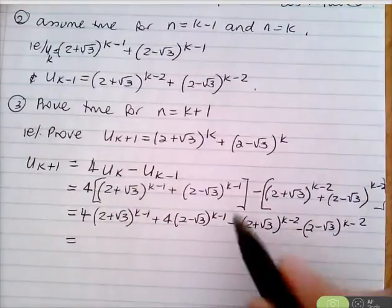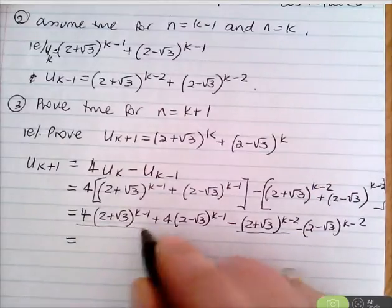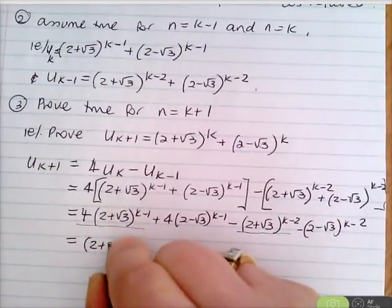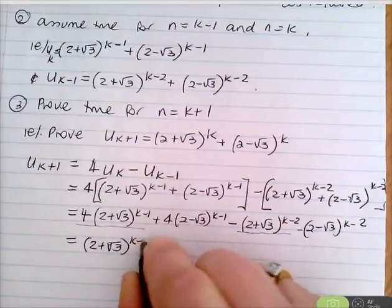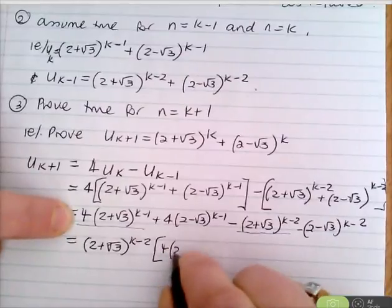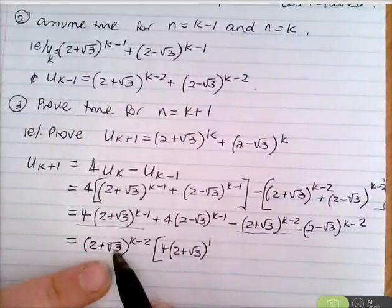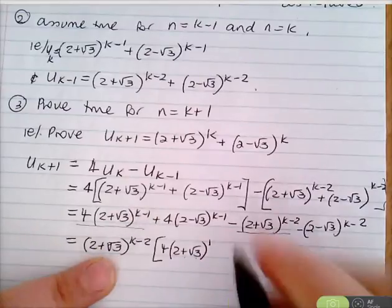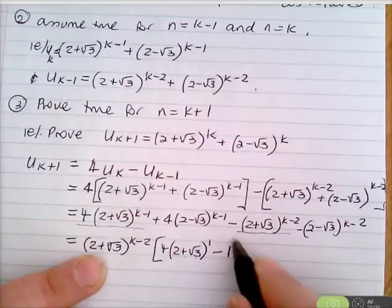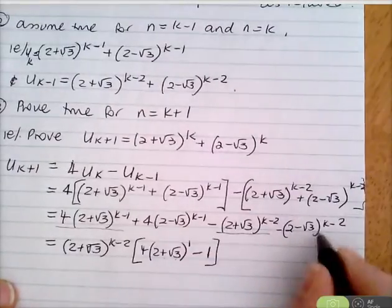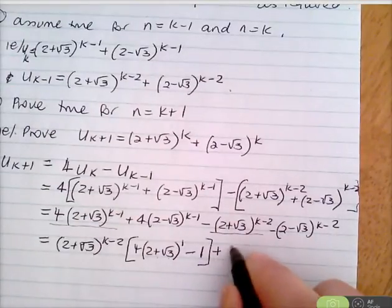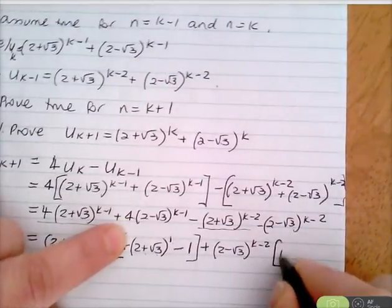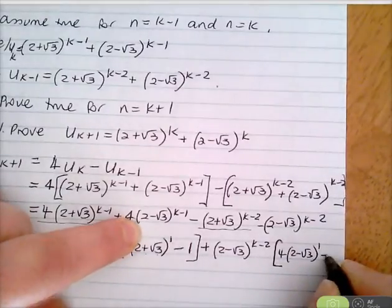Taking (2+√3)^{k−2} as a common factor from the first two terms gives (2+√3)^{k−2}[4(2+√3) − 1], and (2−√3)^{k−2} from the last two gives (2−√3)^{k−2}[4(2−√3) − 1].